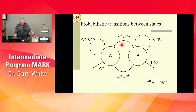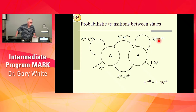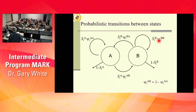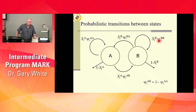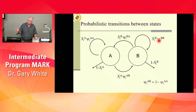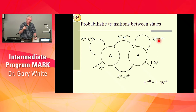So psi-AA is the probability of staying in A, psi-BA is the probability of going from B to A. If there's an irreversible transition, you just fix it to zero. For life stages where you can never go backwards, you fix all the backward transitions to zero.